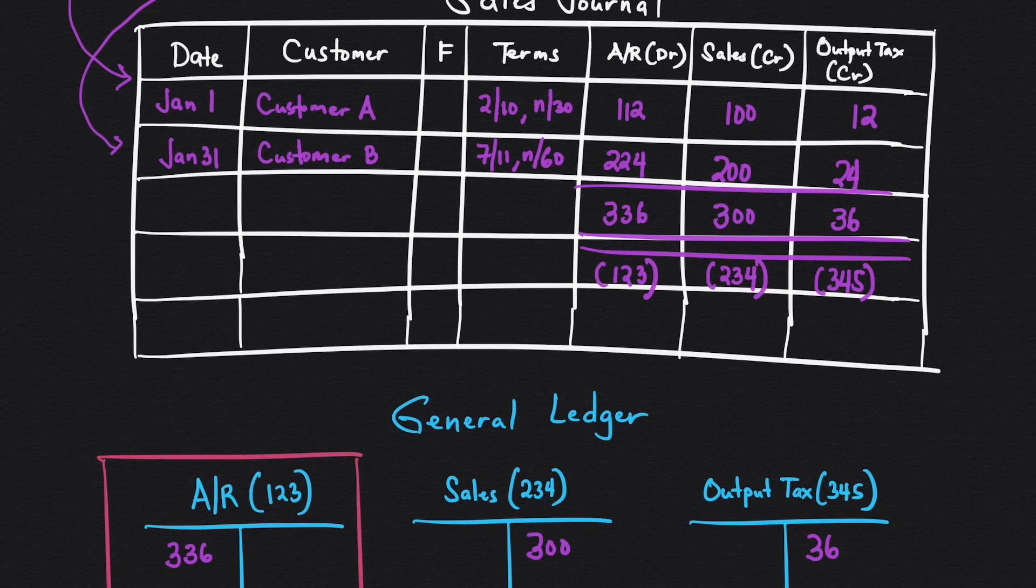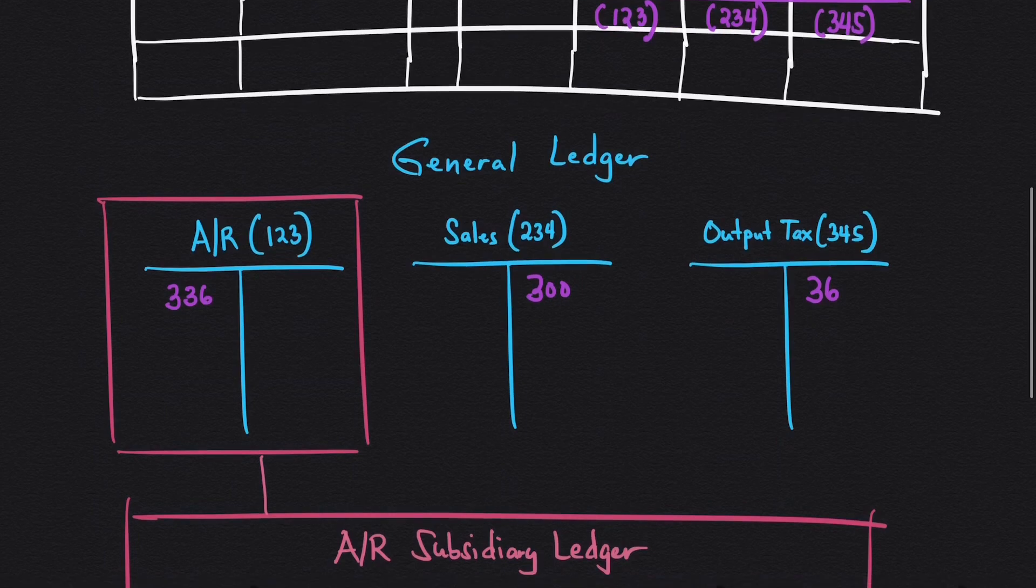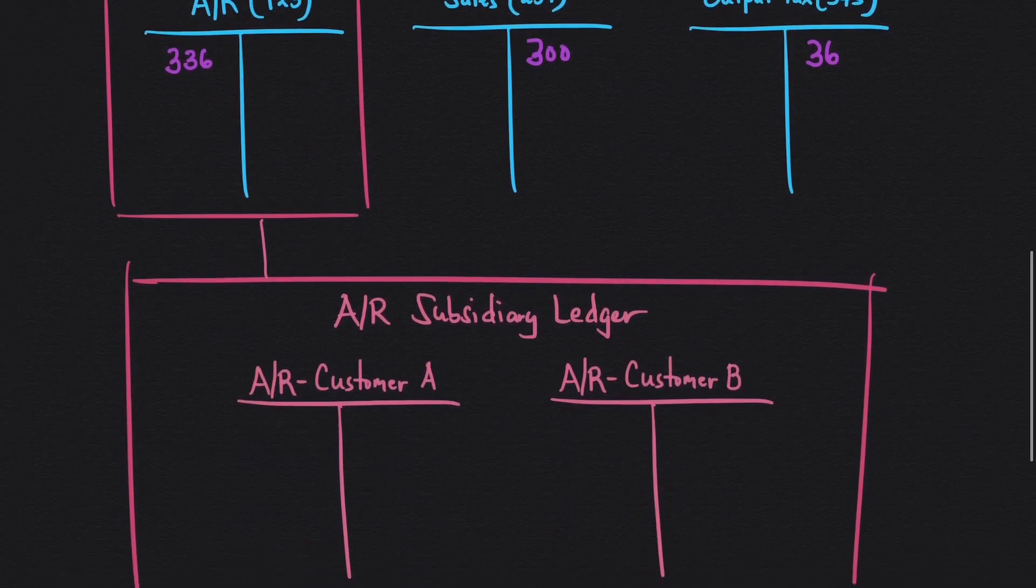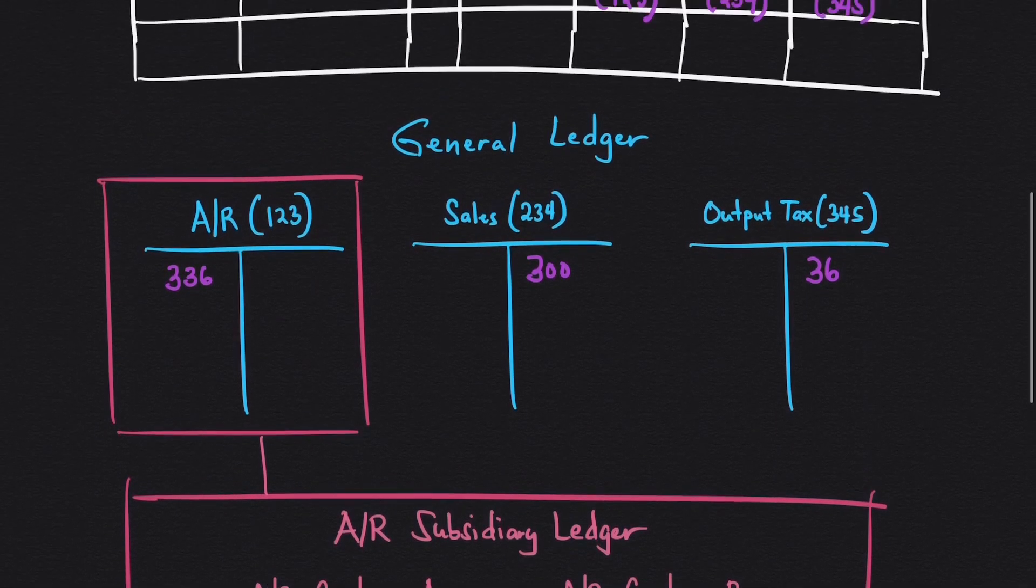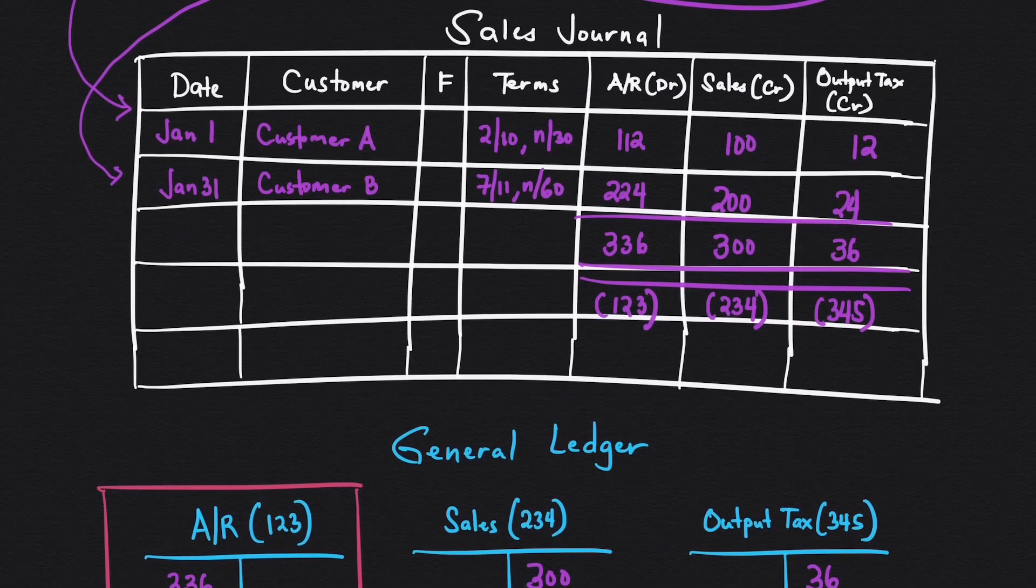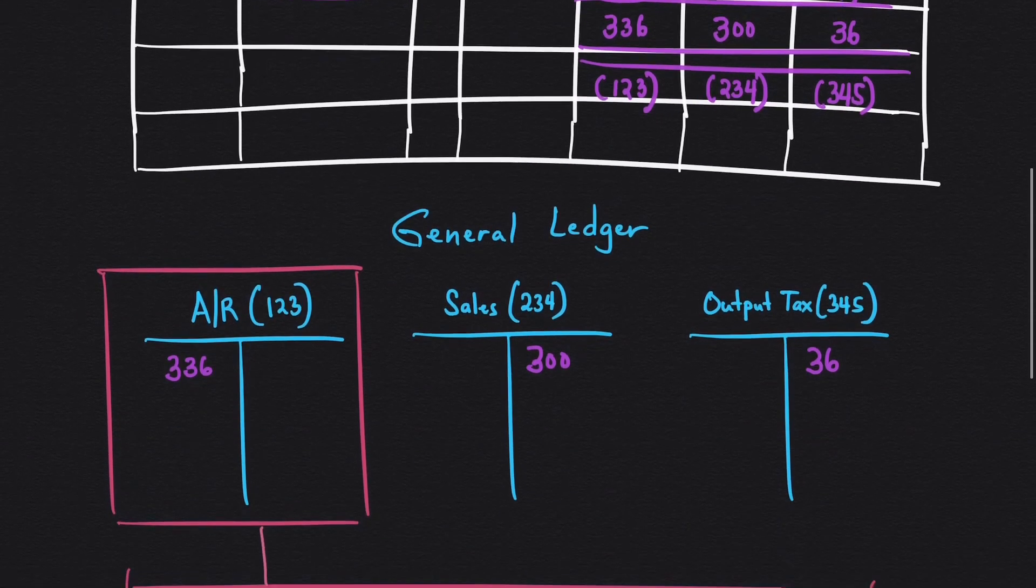Now, how do we post this in the subsidiary ledger? Because under A/R, which is a control account, you have the subsidiary ledgers. You have two customers. For the posting in the subsidiary ledger, you only need the information on the accounts receivable. For customer A, it's 112, and for customer B, it's 224.